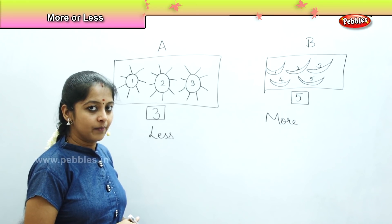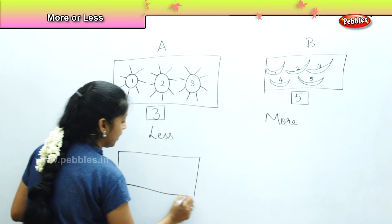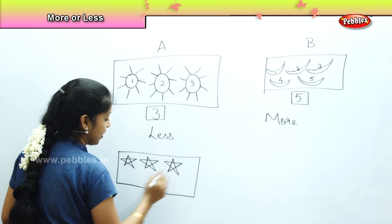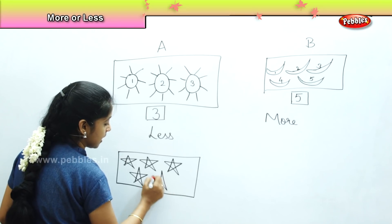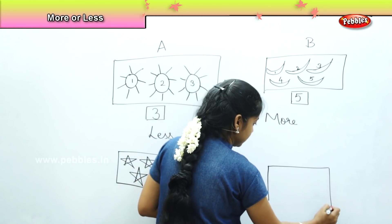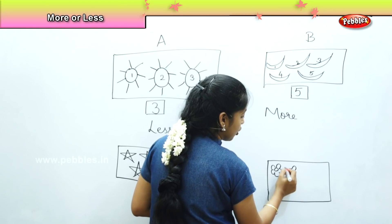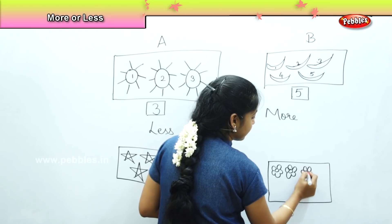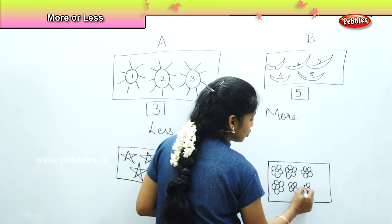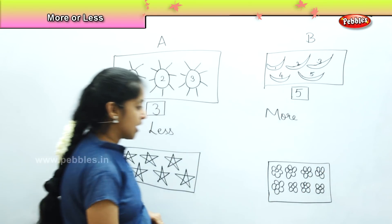Shall we do one more example to understand it better? So here comes our next example where we are going to draw few stars. Do you all like stars? When can you see the stars in the sky? The stars come only during the night time. And do you like flowers? Flowers are very pretty. You can have a lot of different variety of flowers in your garden, in various shapes, sizes and colors.